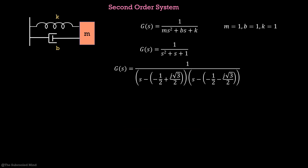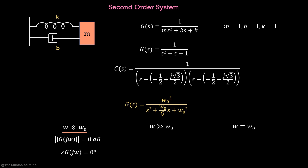We compare it to the standard second-order form and substitute s = jω. The analysis follows the same idea: we look at the response for ω much less than ω₀, then for ω much greater than ω₀, and then at ω = ω₀. For ω much less than ω₀, the gain is 0 dB and the phase is 0 degrees. For ω much greater than ω₀, the gain rolls off at −40 dB per decade since there are two poles, and the phase reaches −180 degrees.